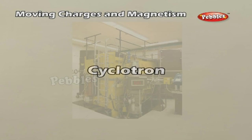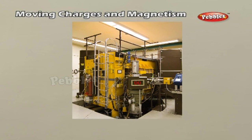Cyclotron. A cyclotron is a type of particle accelerator. Cyclotrons accelerate charged particles using a high-frequency alternating voltage. A perpendicular magnetic field causes the particles to spiral almost in a circle so that they re-encounter the accelerating voltage many times.